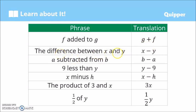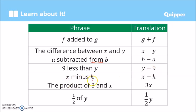'The difference between x and y' — difference means subtraction, so that is x − y. 'a subtracted from b' — this is important: because of the word 'from,' b comes first, then we subtract a, giving us b − a. '9 less than y' — y comes first, then we subtract 9, giving us y − 9.